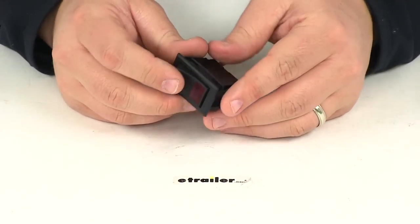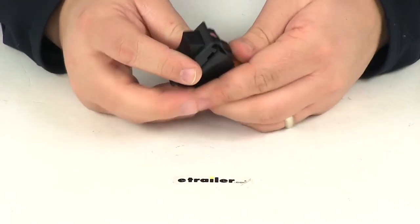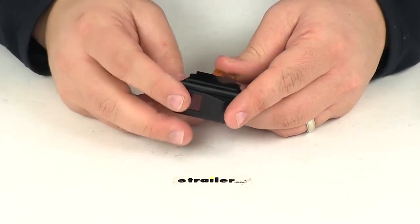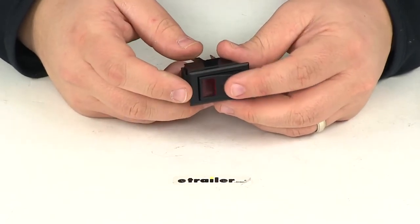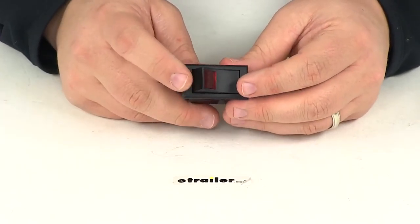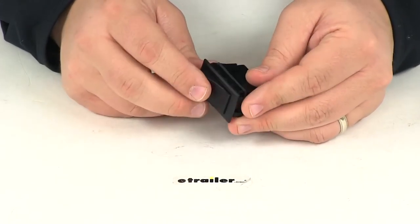When it comes to panel thickness, this will install in anywhere from three thirty-seconds of an inch to one-eighth of an inch, or to three-sixteenths of an inch. You've got a variety of options with panel thickness.